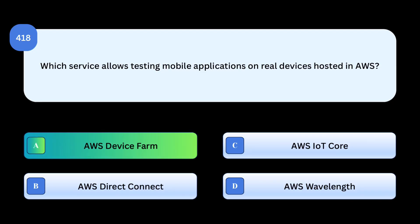Correct answer: AWS Device Farm. AWS Device Farm lets developers test on real Android and iOS devices in the cloud. Why others are incorrect: AWS IoT Core connects IoT devices, not app testing. AWS Direct Connect is a network connectivity service. AWS Wavelength is an edge computing service, not for app testing.